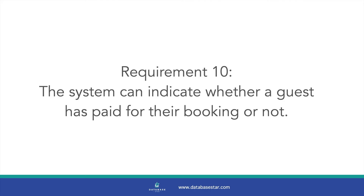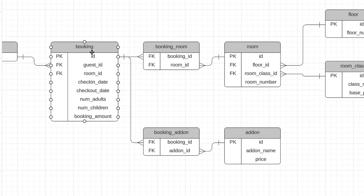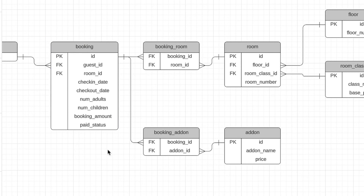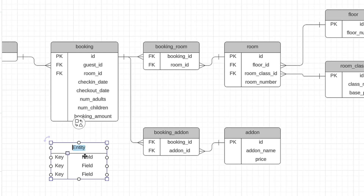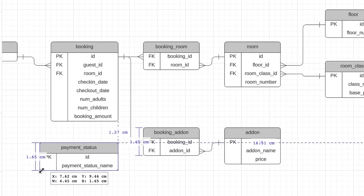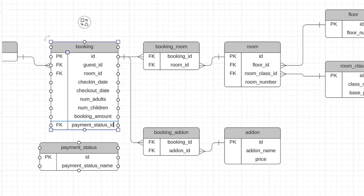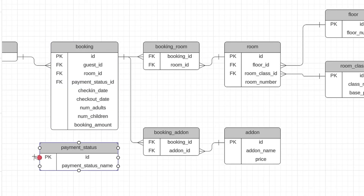Requirement 10 indicates whether a guest has paid for their booking or not. This could be an attribute in the booking table showing paid or unpaid. However, since this could be a defined list that might expand in the future, we'll create a lookup table called payment_status with an ID and a name field. We also add a foreign key to the booking table. Requirement 10 is now met.